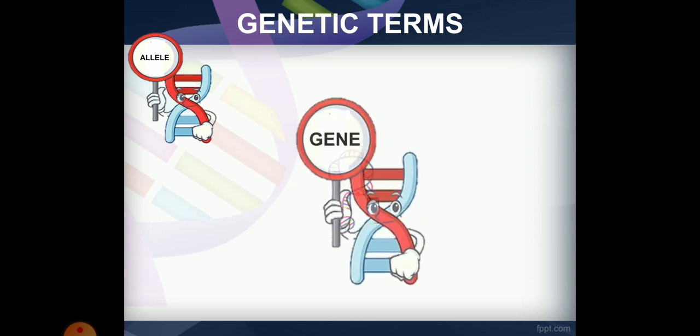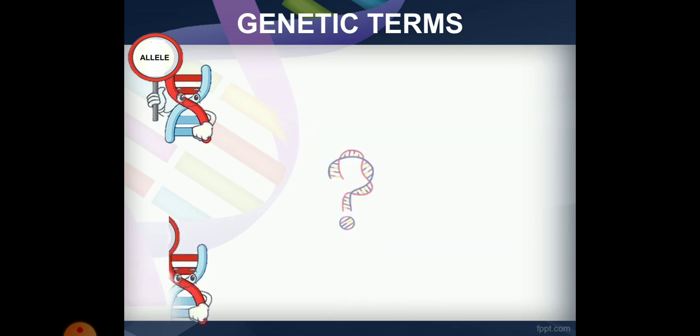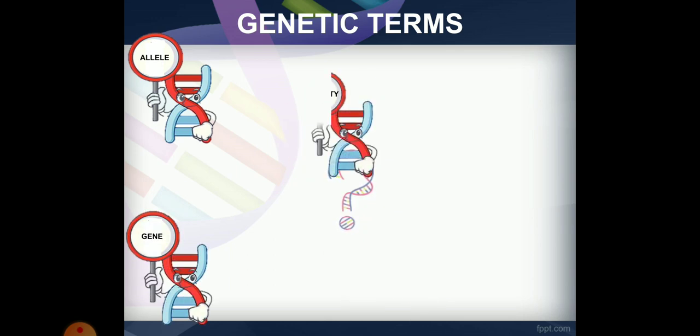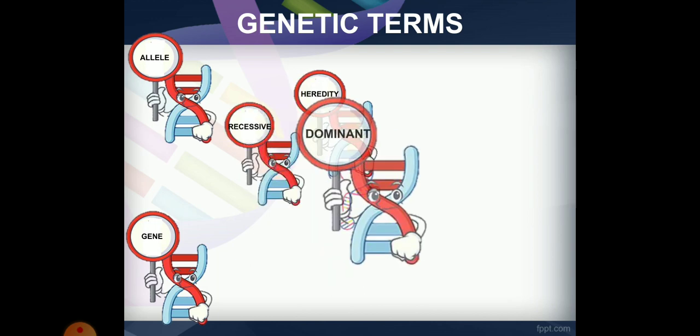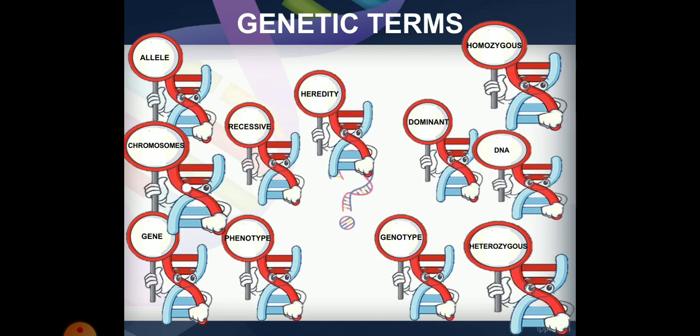Genetics has many terms. These include: Allele, Gene, Heredity, Recessive, Dominant, Phenotype, Genotype, Homozygous, Heterozygous, DNA, and Chromosome.